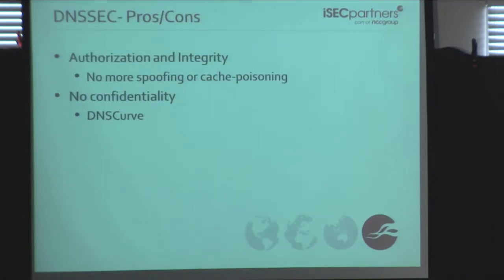So hopefully that was a useful refresher. DNSSEC provides some really good things — authorization and integrity, so no more spoofing, no more cache poisoning, which is a huge benefit since it's still an issue we're dealing with right now. Notably though, it doesn't provide confidentiality, so anybody sniffing on that network will know where you're going. There are other solutions for confidentiality — if you're interested, take a look at DNSCurve. That's a pretty cool solution for DNS record confidentiality, but it's a little out of scope for this talk.